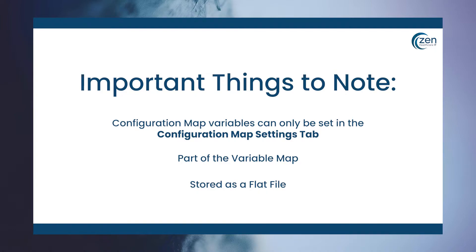By default the configuration map is stored as a flat file on the MirthConnect server to facilitate easier migrations. Alternatively, the configuration map can be stored in the local MirthConnect database for advanced use cases like a clustered MirthConnect environment.